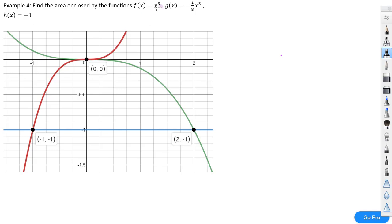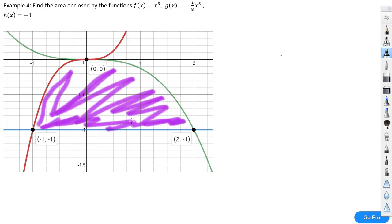We're given the function f(x) = x³, g(x) = -1/8 x³, and h(x) = -1. What we want to do is find the area enclosed by all three of those functions, which would be this area right here. We're looking to find the area of this shape.